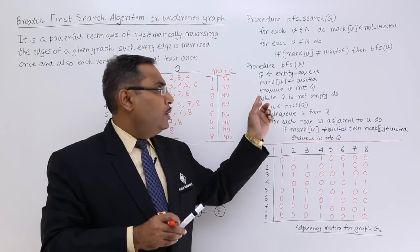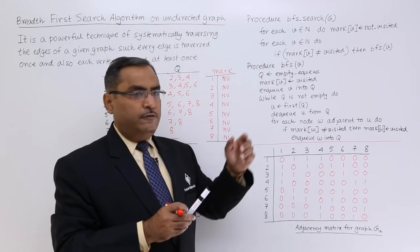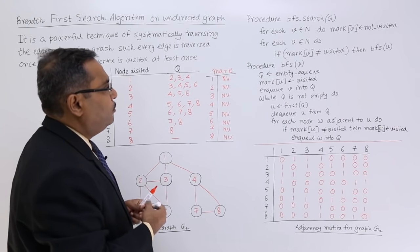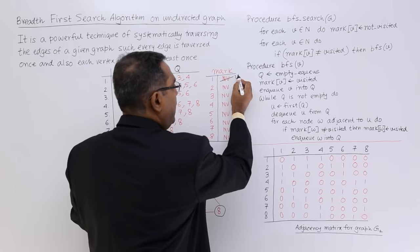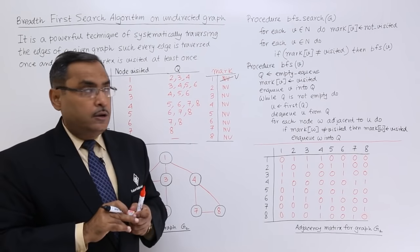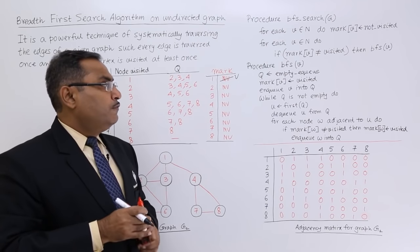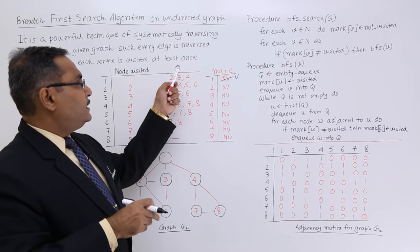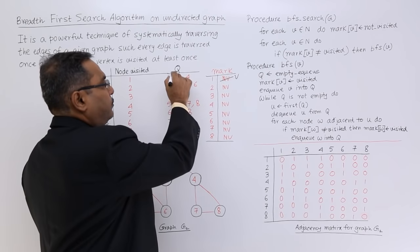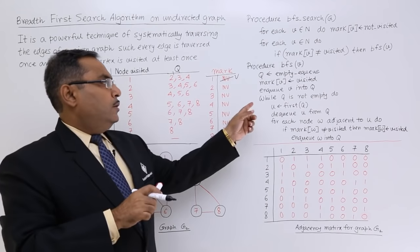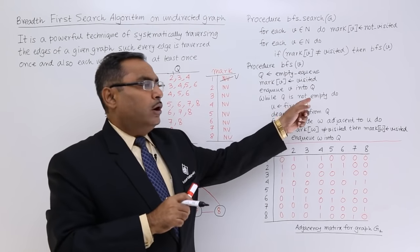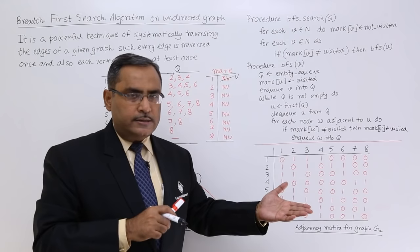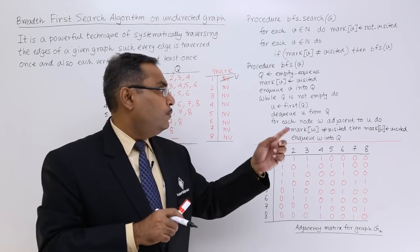Q is set to empty. Mark of V is set to visited, meaning node number 1 in the mark array is marked as visited. Then we enqueue V into Q, so Q will have the value 1. While Q is not empty — Q cannot be empty because we just inserted value 1.